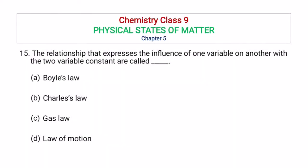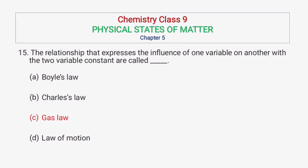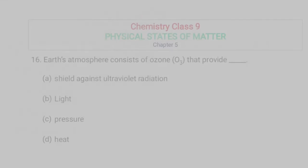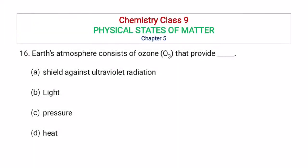MCQ: The relationship that expresses the influence of one variable on another with two variables constant is called — Boyle's law, Charles's law, gas law, or law of motion? The correct option is gas law. Earth's atmosphere consists of ozone that provides a shield against — ultraviolet radiation, light, pressure, or heat? The correct option is shield against ultraviolet radiation.